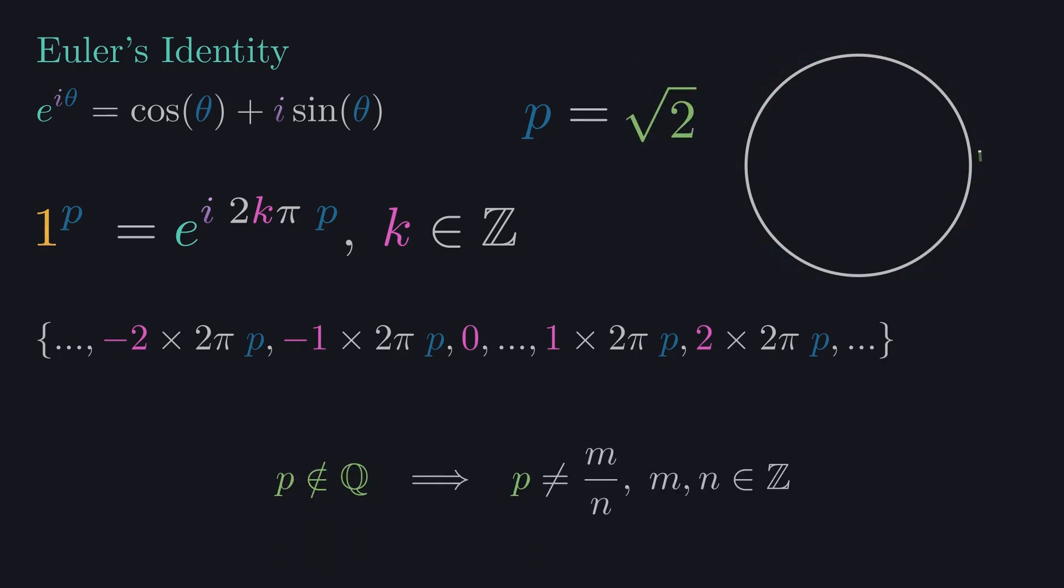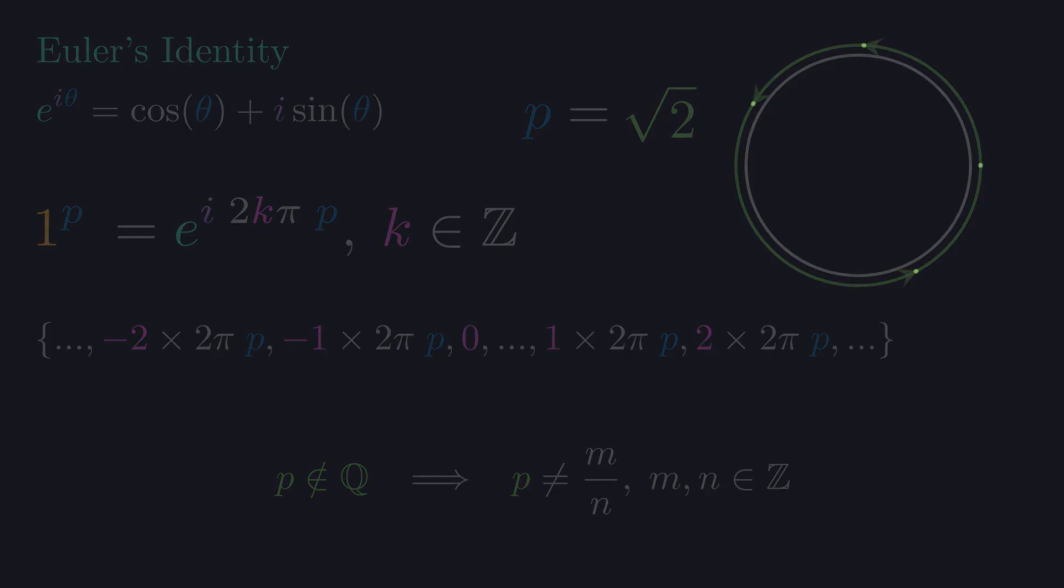With irrational multipliers, this doesn't happen, because they are not fractions, they cannot establish a repeating pattern. That causes every solution to miss every other solution on the unit circle. The solution generator keeps going forever, always dropping new points somewhere in between existing ones.